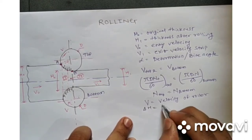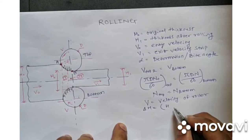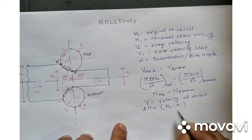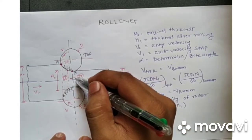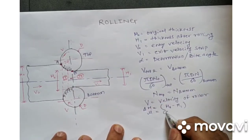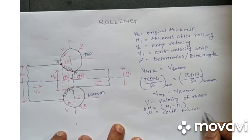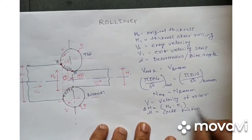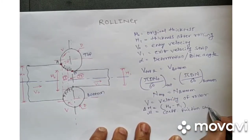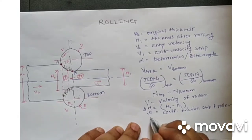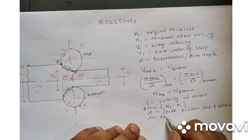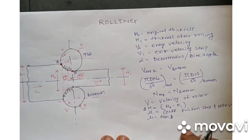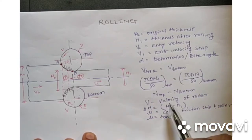Delta h is the reduction in thickness of the strip, which is H0 minus H1. There is friction between the rollers and the strip — without friction the strip cannot be drawn. Mu is the coefficient of friction between the strip and the roller, dependent on the material of both. Beta is the friction angle, where mu equals tan(beta).